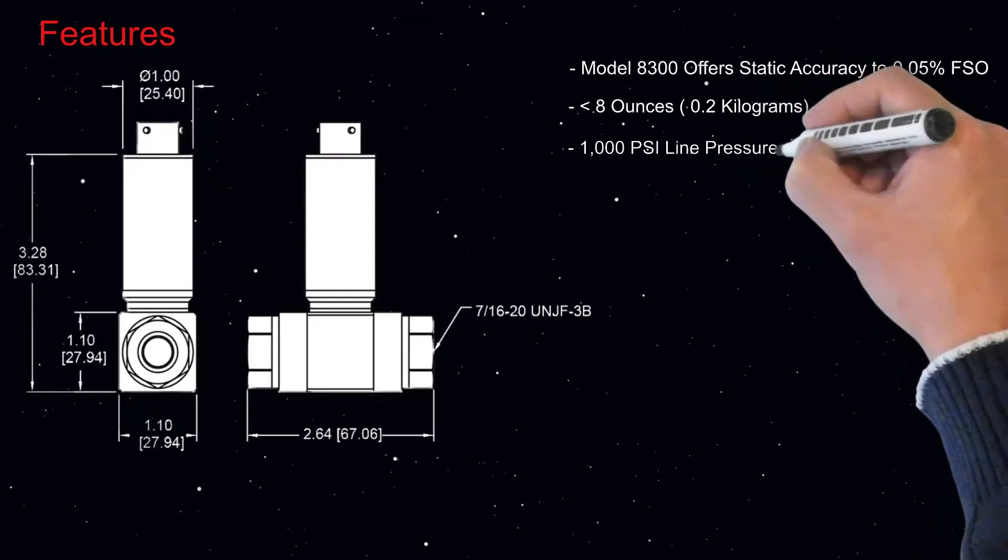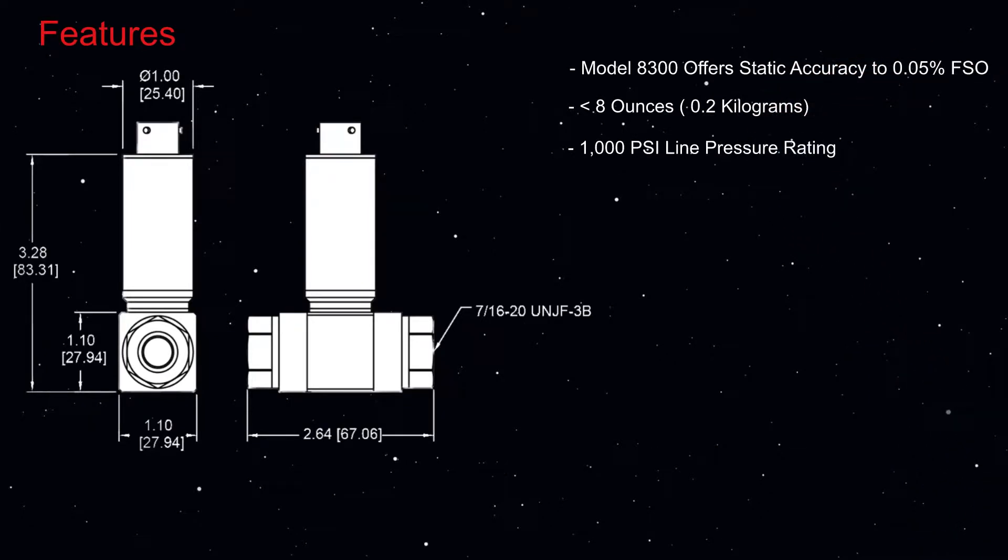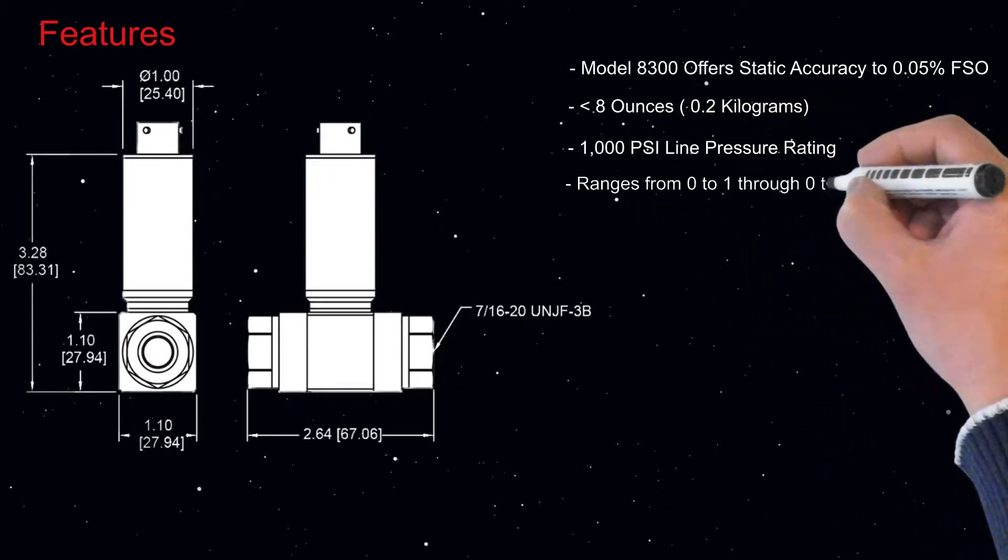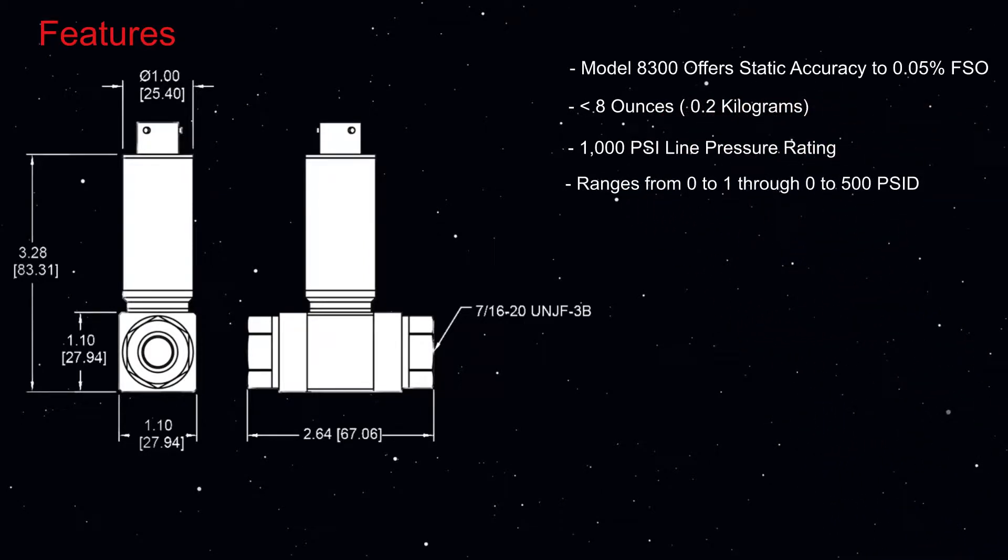Both of these differential pressure transducers have a 1000 PSI line pressure rating. The ranges go from 0 to 1 through 0 to 5 pounds per square inch differential.